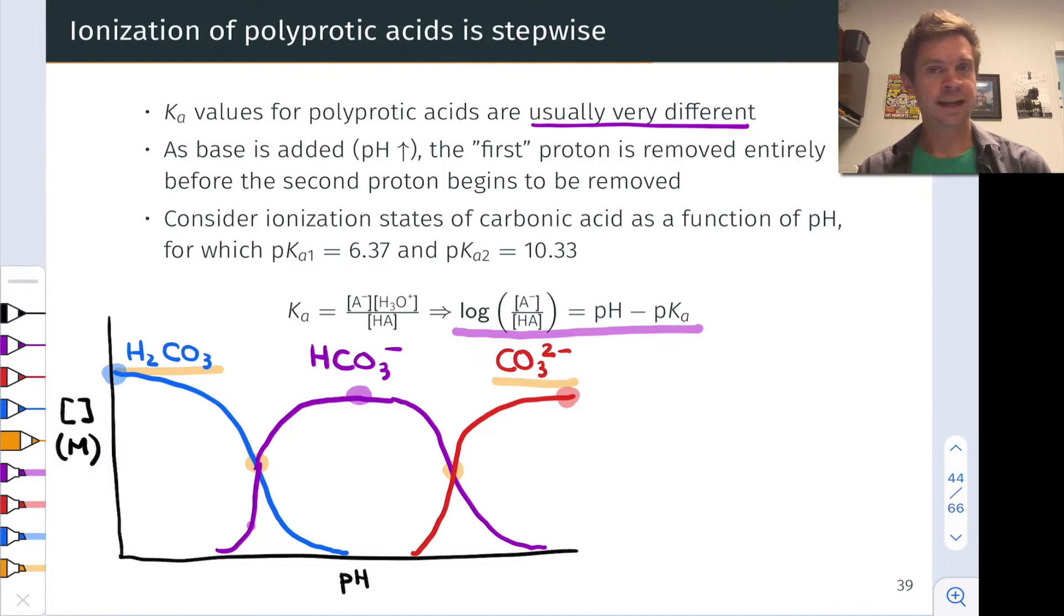For example, for H2CO3 and HCO3 minus, there's this region where the concentrations are roughly equal, and at that orange dot highlighted in the middle, they're exactly equal to each other.